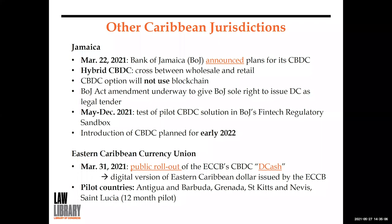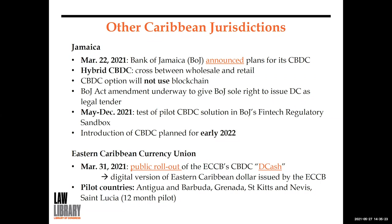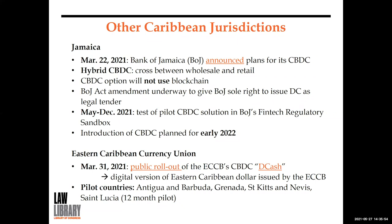The Eastern Caribbean Currency Union is also in advanced stages. Established in 1983, the Eastern Caribbean Central Bank is the monetary authority for eight island economies: Anguilla, Antigua and Barbuda, the Commonwealth of Dominica, Grenada, Montserrat, St. Kitts and Nevis, St. Lucia, and St. Vincent and the Grenadines. On March 31st, 2021, they had the public rollout of their CBDC called DCash — a digital version of the Eastern Caribbean dollar. They are currently doing a 12-month pilot in Antigua and Barbuda, Grenada, St. Kitts and Nevis, and St. Lucia.